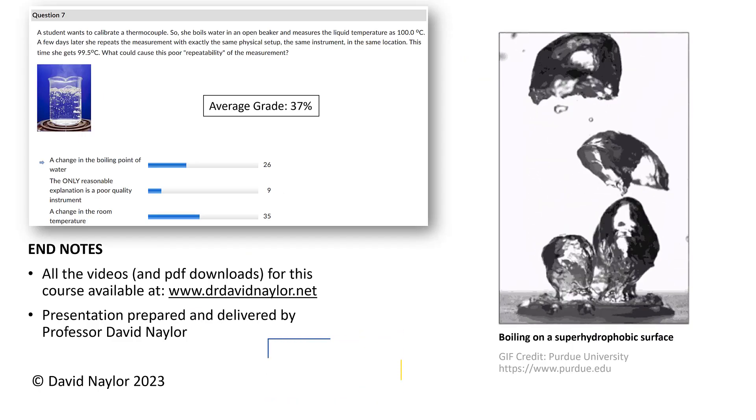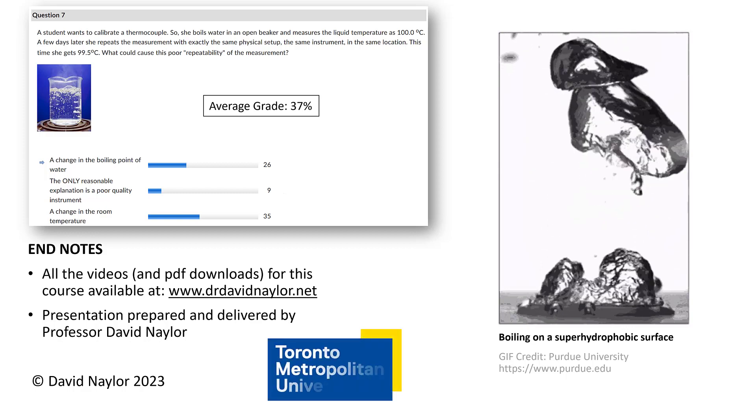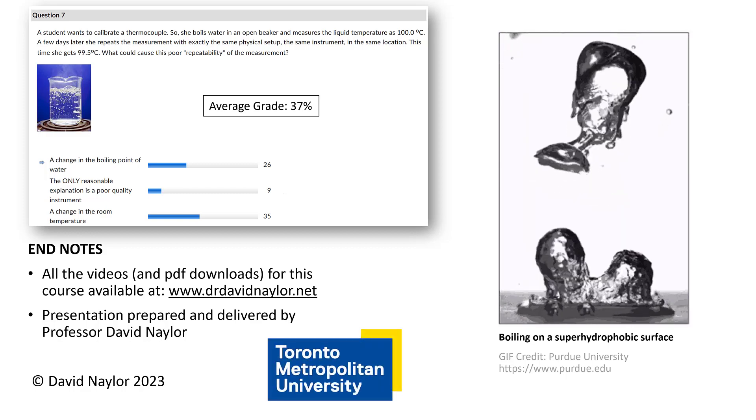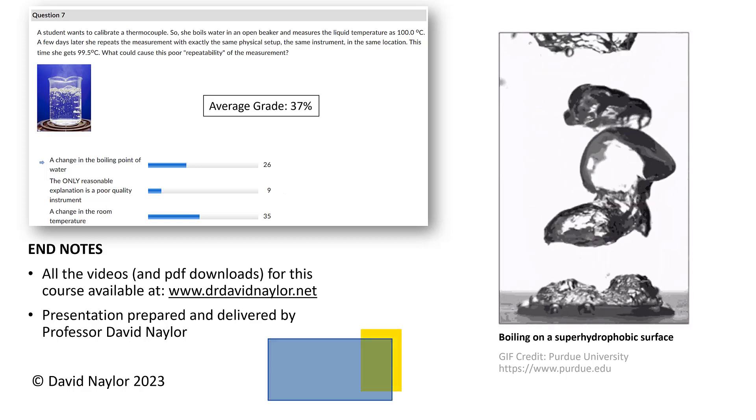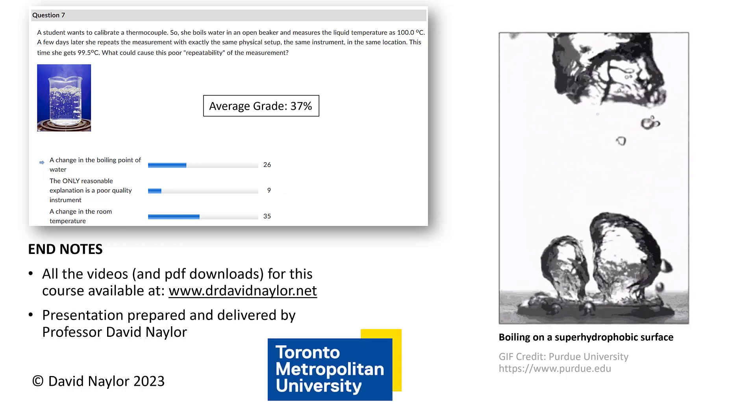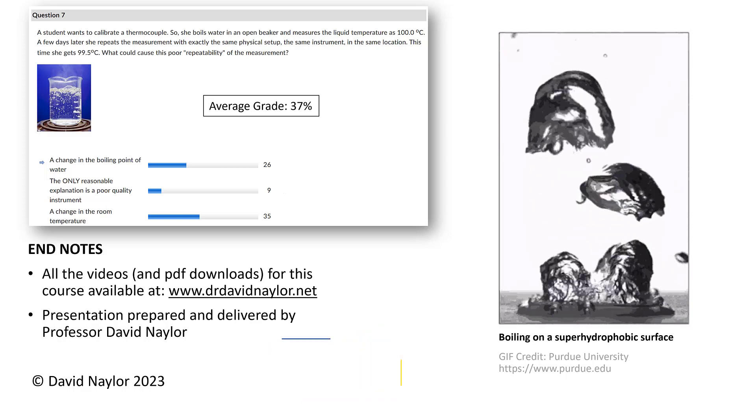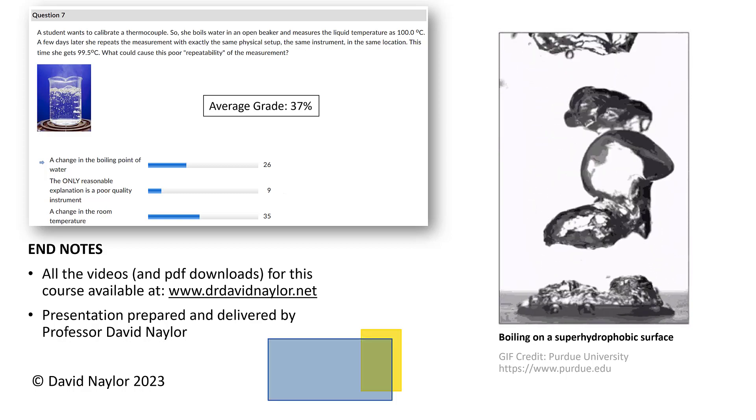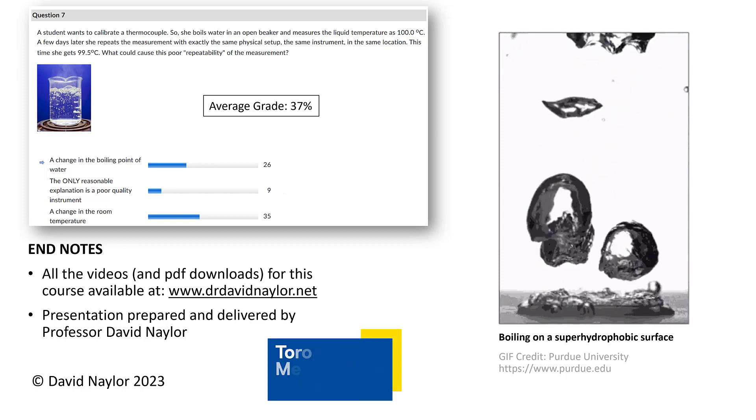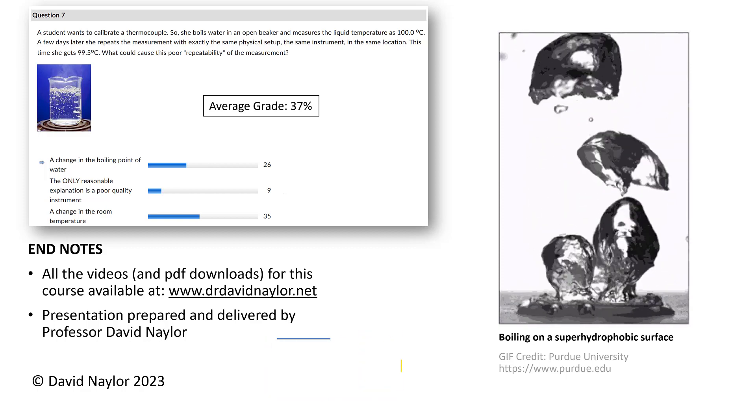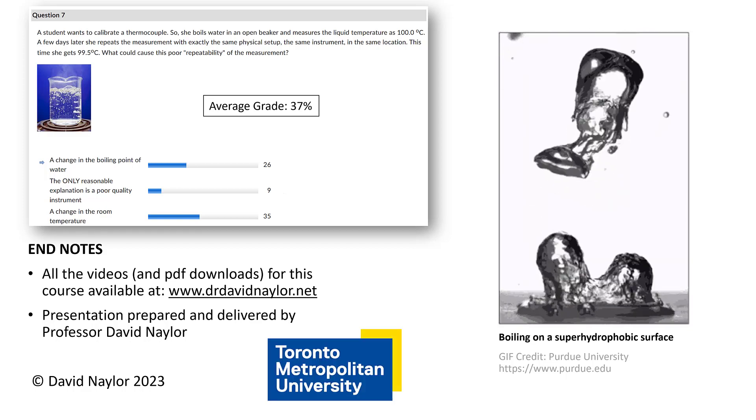So I hope you got that right. If you didn't get it right, you shouldn't feel bad. As you can see from this quiz question, which is basically the same question, most of my students did not get this right. Most of my students who have taken a course in thermodynamics, for some reason thought it was a change in the room temperature that caused the boiling point of water to change, which of course is incorrect. And that completes this video.